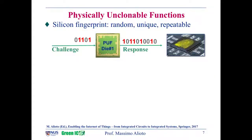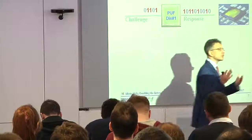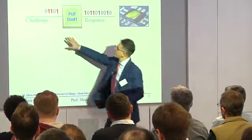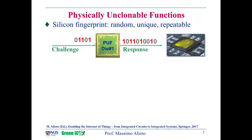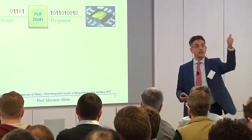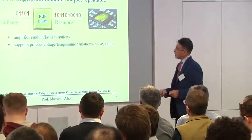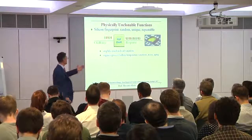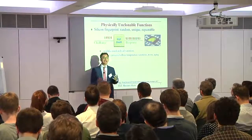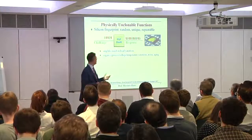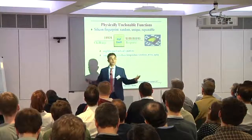Just to recall a few concepts: a physical unclonable function is essentially a circuit — a kind of digital circuit, though the response is digital. You apply a challenge and you get a response, which is pretty much like a fingerprint — it tends to be random, so unpredictable, as well as unique and repeatable, pretty much like our fingerprint. In practice, these are circuits with narrow behavior that amplify random local variations, highlighting the intrinsic difference between transistors on the same silicon die, while suppressing or mitigating dependence on any other common factor. This quality translates into well-known metrics that quantify the quality of the PUF.